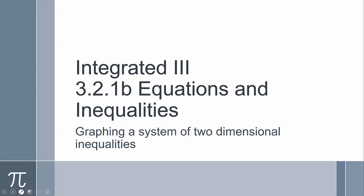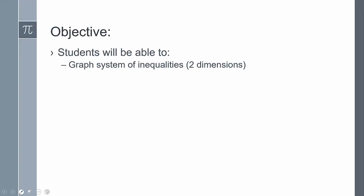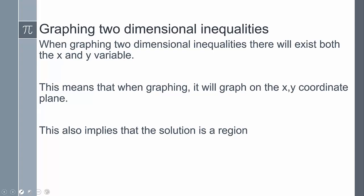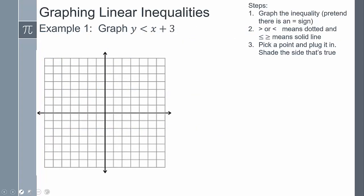In lesson 3.2.1b we're going to be graphing a system of two-dimensional inequalities. Today's objective is to graph systems of inequalities in two dimensions. When we graph two-dimensional inequalities, both x and y will always exist, so we put everything on the coordinate plane. When we shade or map the region, it won't be a one-dimensional line - we're actually going to be shading an entire region.